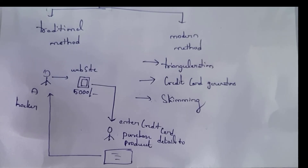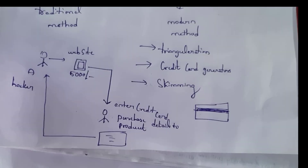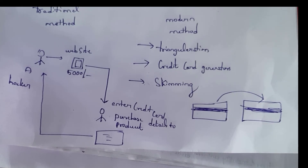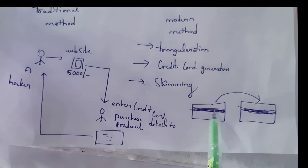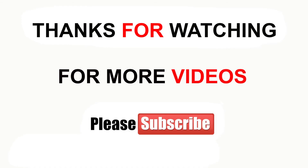Next is the credit card generator method. On the internet there are many websites that can generate fake credit cards, so hackers generate fake credit cards using these websites. Last one is the skimming technique. There is a black color strip present on the credit card where all the details are stored. The hacker copies all the data present in this black strip to another credit card. This is an example of the skimming technique. Complete cyber security tutorials are provided in the description — you can watch from there. Thank you.